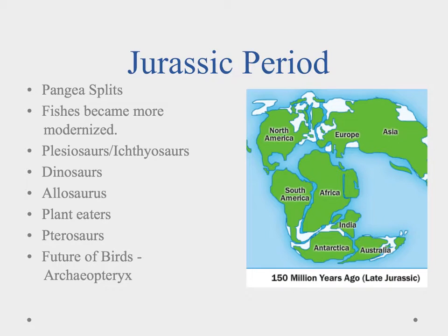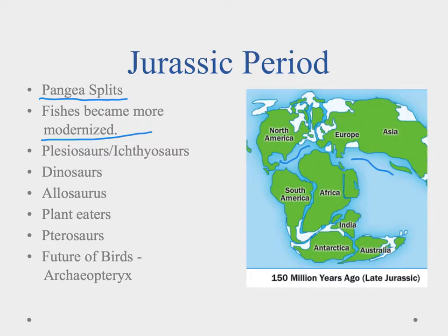The Jurassic Period was pretty phenomenal geologically in that Pangea started to split. When it did, we had shallow, warm seas that were protected in between the continents as they were starting to separate and migrate apart. This gave us a new type of environment to exploit — instead of that one big Panthalassa ocean, we're starting to see different seas and different oceans forming. That allowed for new things to evolve, including more modernized types of fish.